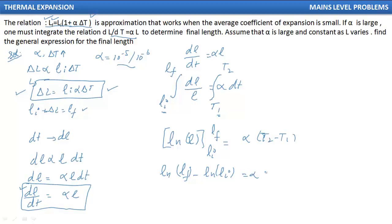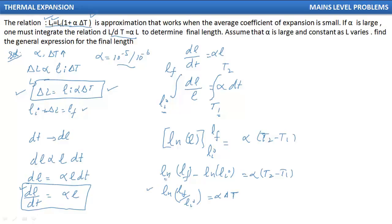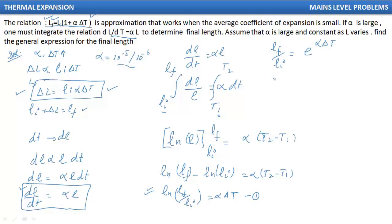Setting T2 minus T1 as delta T, and using the log property that ln(x) minus ln(m) equals ln(x/m), we get ln(L_final / L_initial) equals alpha·delta T. Taking e to the power of both sides, L_final upon L_initial equals e^(alpha·delta T). Therefore, L_final equals L_initial·e^(alpha·delta T).